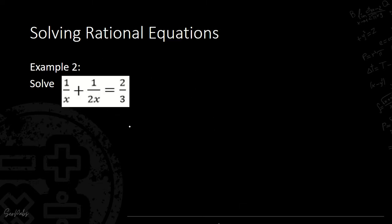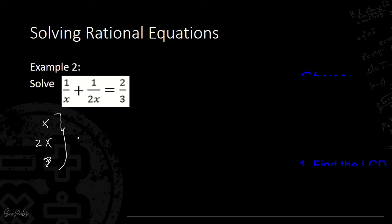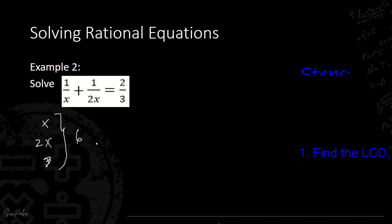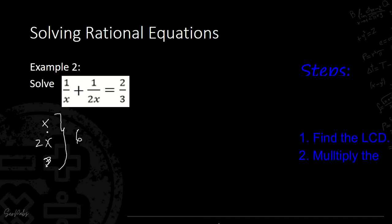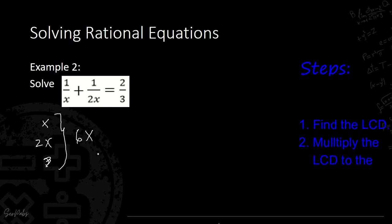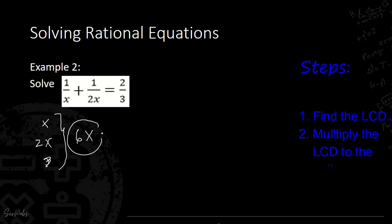Let's proceed with Example 2. First, identify the LCD. The three denominators are x, 2x, and 3. The lowest number divisible by both 2 and 3 is 6. Including x, our LCD is 6x.